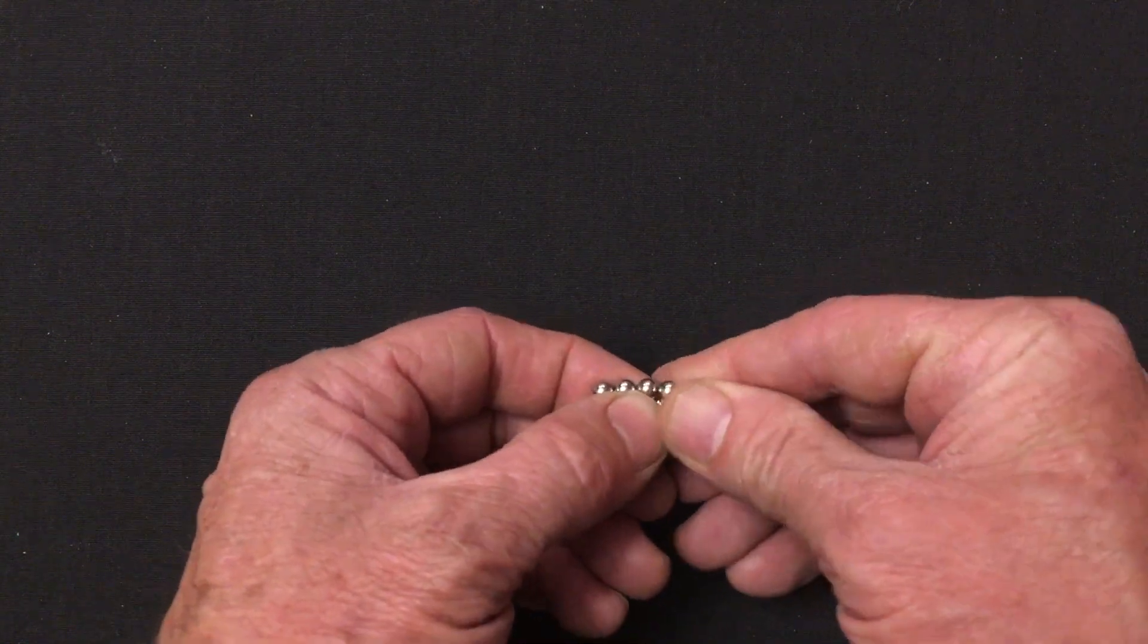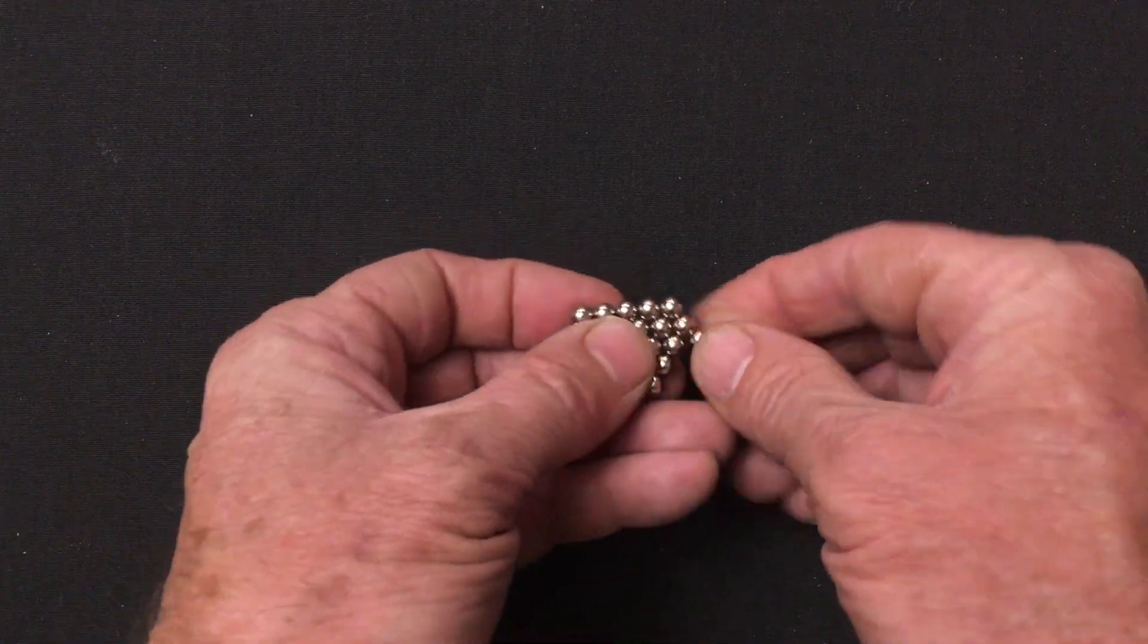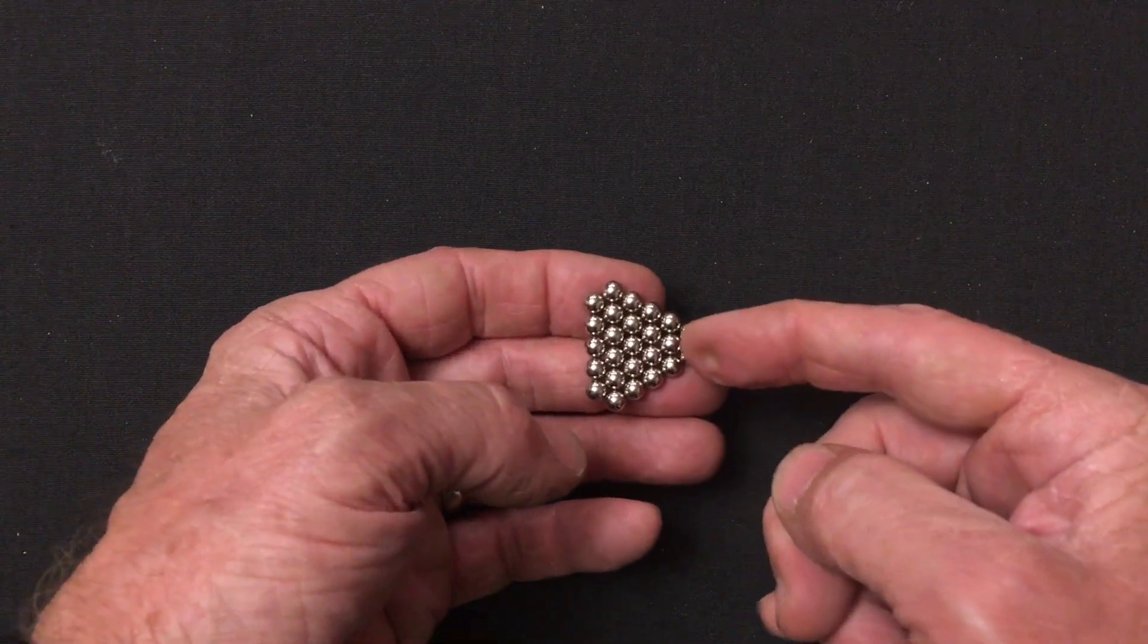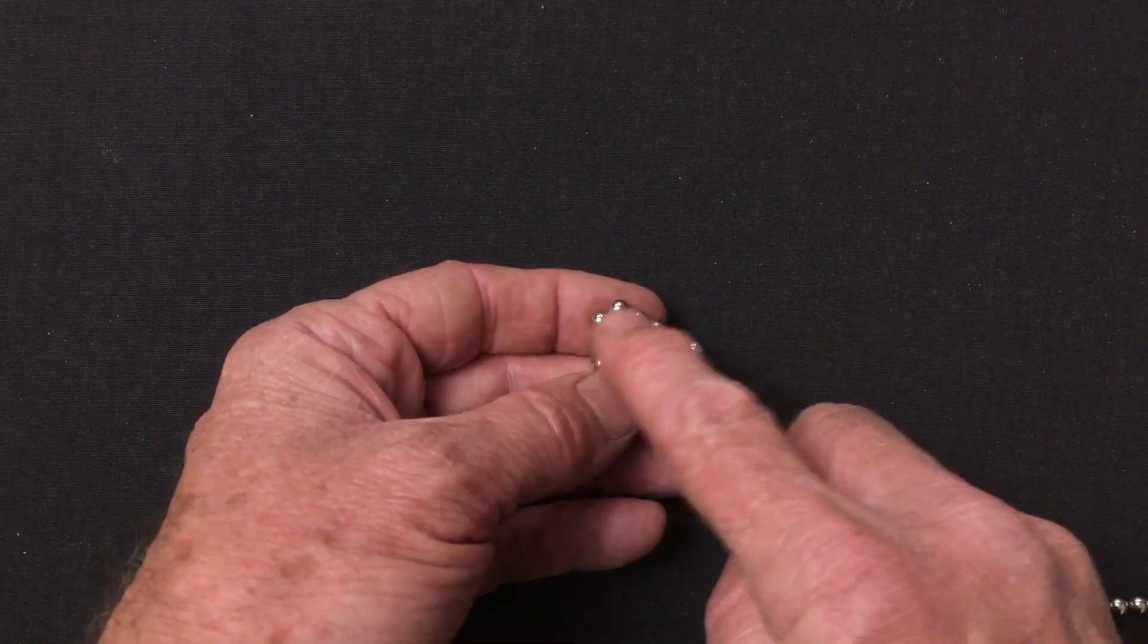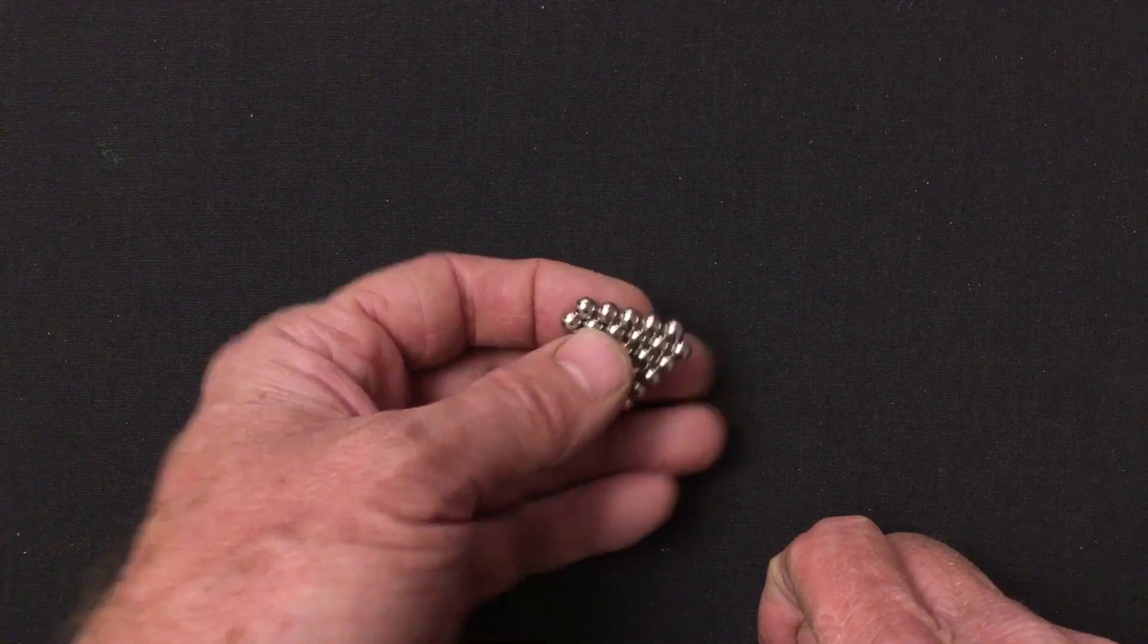Then on every other side of the hexagon I'm going to add two magnets. So I've extended one two three of those sides to form this two by five hexagon. I need two of these.